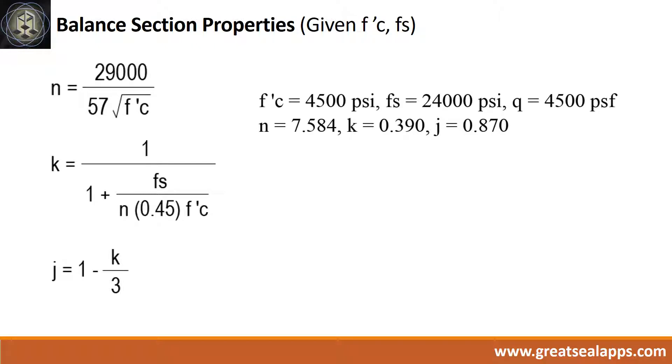Given f'c equals 4,500 PSI, fs equals 24,000 PSI. The balance section properties are as follows: n equals 7.584, k equals 0.39, j equals 0.87.